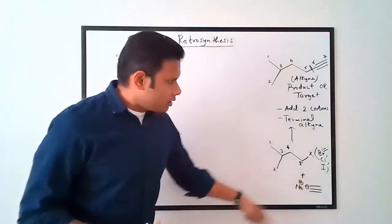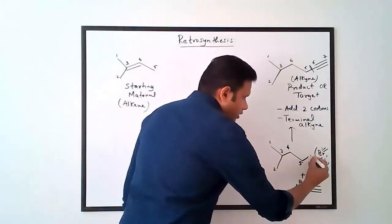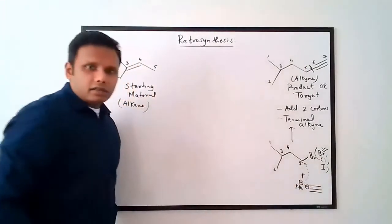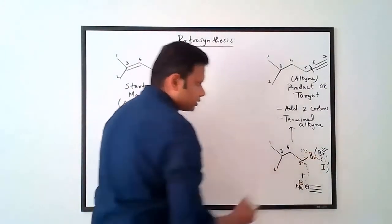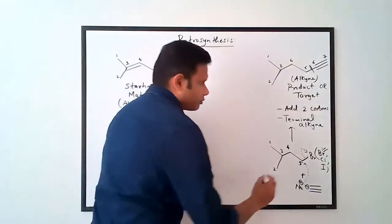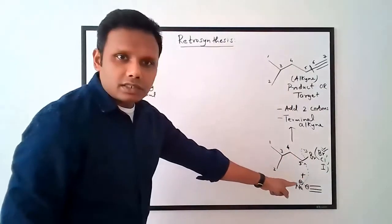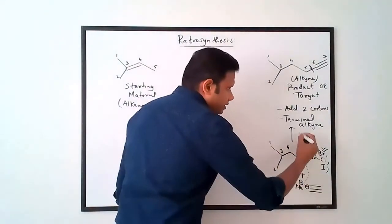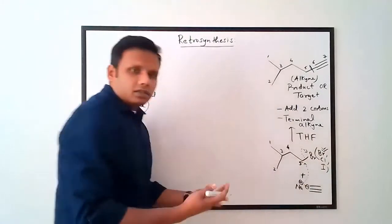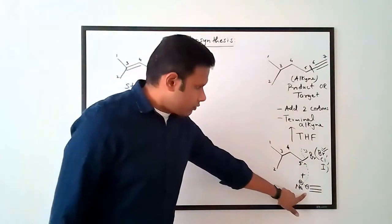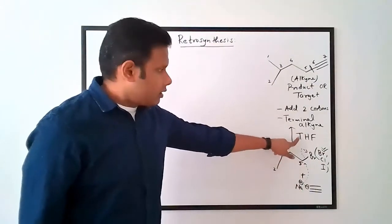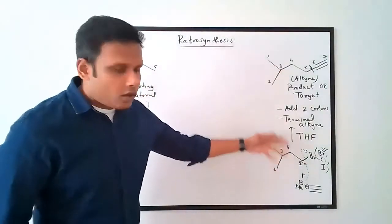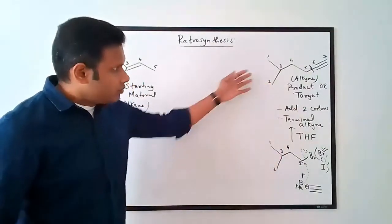So if I have this alkyl bromide, this nucleophile can go and attack that carbon and the bromine gets kicked out. Going forward, this gives me the product. This is an SN2 reaction, so we need a polar aprotic solvent. For sodium acetylide, a good solvent typically used is THF. So I have a nucleophile, an alkyl halide with THF solvent, and a primary alkyl halide — we do the reaction. So we've worked backwards to this alkyl halide.